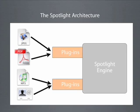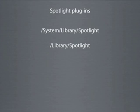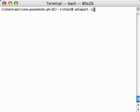Spotlight plug-ins do most of the work for the Spotlight engine. Each plug-in is specialized for a particular file type or set of file types. For example, there is one Spotlight plug-in for Keynote, and another for all image types that Mac OS X natively supports. Spotlight plug-ins are stored in either /System/Library/Spotlight or /Library/Spotlight. You can also check what plug-ins are installed and their location from the command line using the tool mdimport with the "-l" attribute.